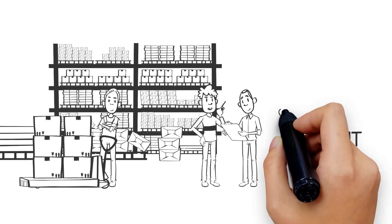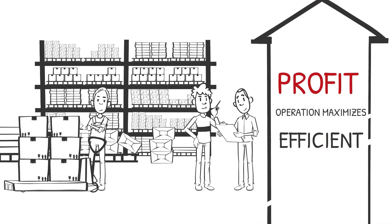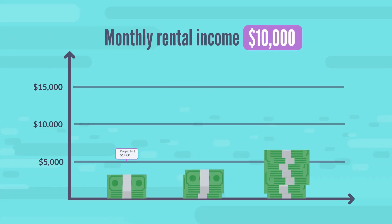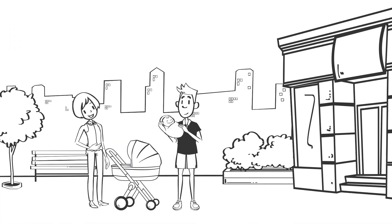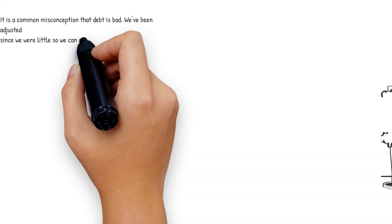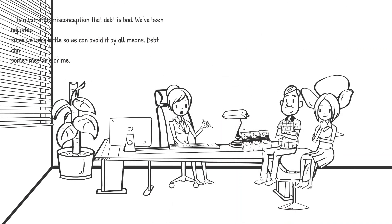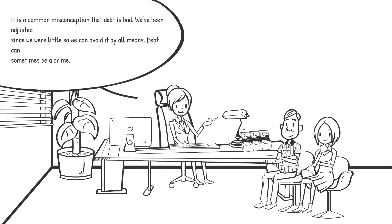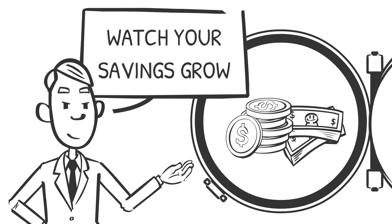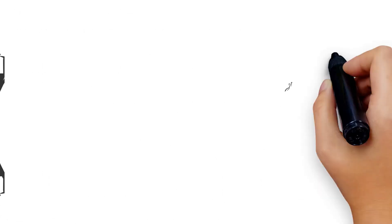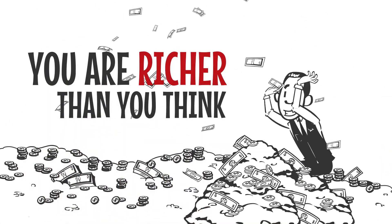When stockbrokers and banks take advantage of your financial ignorance, you are just a customer. However, if you are financially educated, you can keep these benefits for yourself. The word 'income' is one of the most basic in the language of money. When a person buys rental property, they will be able to clearly see how their income increases. Similarly, it is easy to see how debt can reduce income. It is a common misconception that debt is always bad — we've been taught since we were little to avoid it by all means. But debt can sometimes be used to your advantage. For example, if you take out a bank loan to buy a rental property, you may be able to repay the loan and increase your income. This makes debt an asset.